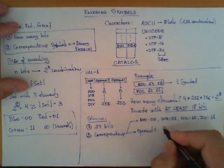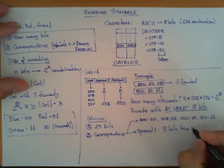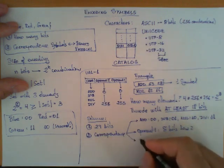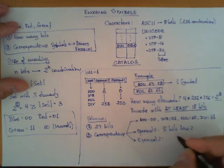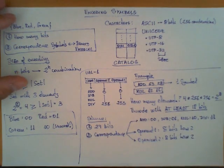Then, operand one will be encoded with eight bits in base two, the number, and the third field, which is operand two, the same, eight bits in base two.